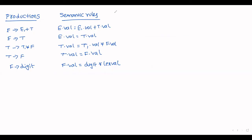Consider an example. Assume an input string: 5 plus 3 into 4. For this input string, we have to write the dependency graph. The procedure is the same — first write down the parse tree, convert the parse tree into an annotated parse tree, and then show the flow of information.